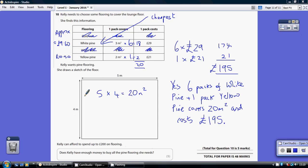So the area of the floor is five metres by four metres. Five fours are 20 metres squared. So we've got to cover an area of 20 metres squared.